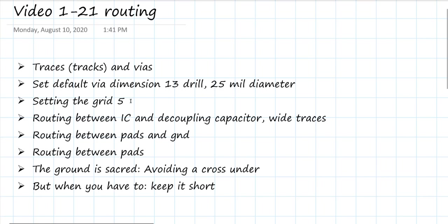There's an order to the routing that is preferred. If connectivity is the only thing we care about, it doesn't matter how we do the routing. But we also care about performance. There are two really important features we're going to take advantage of to decrease noise: one is the location of the decoupling capacitor close to the IC, routed with short and wide traces; and the second is keeping the ground paths from a pad on the top to the ground via short. Those are the most important nets to route initially.